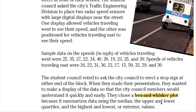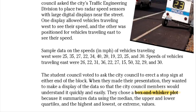One way to organize the data is to put it into a box and whisker plot. The student council voted to ask the city council to erect a stop sign at either end of the block. When they made their presentation, they wanted to display the data so that the city council members would understand it quickly and easily. They chose a box and whisker plot because it summarizes the data using the median, the upper and lower quartiles, and the highest and lowest extreme values.